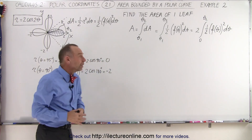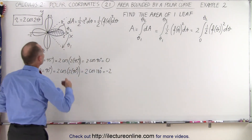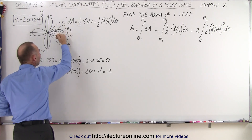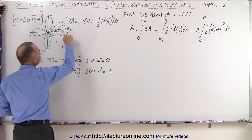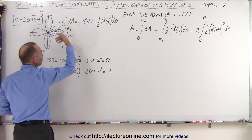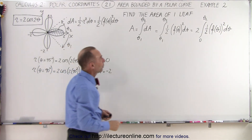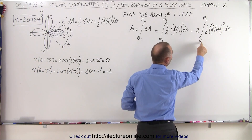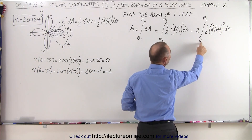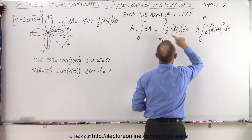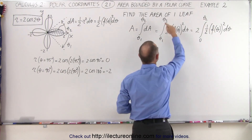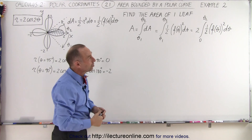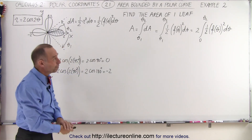Now because of the symmetry, it may be easier to just find the area of half a leaf and double that, so that the first angle starts at 0, which makes things a little bit easier. So we're now going to take this integral, double it, but start the integral from 0 to theta 2 instead of from theta 1 to theta 2. It's the same thing — it just makes it easier whenever one of the limits is 0.